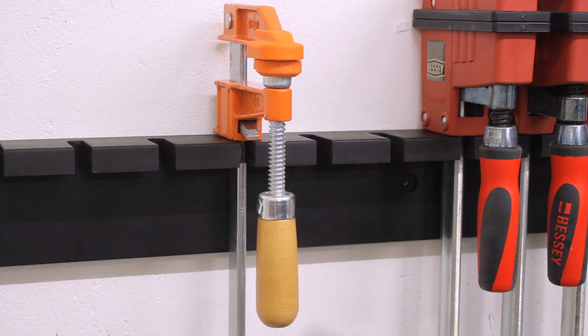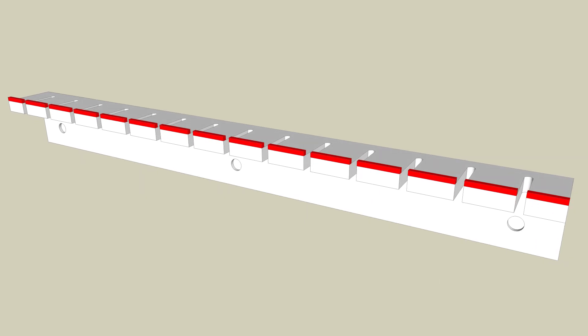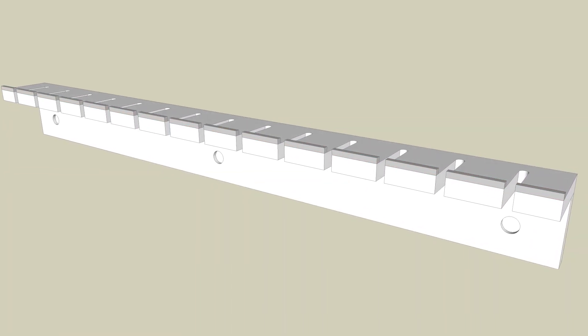This worked quite well but another option would be to simply glue a thin strip of wood or hardboard to the front edge to make a lip prior to cutting out the slots.